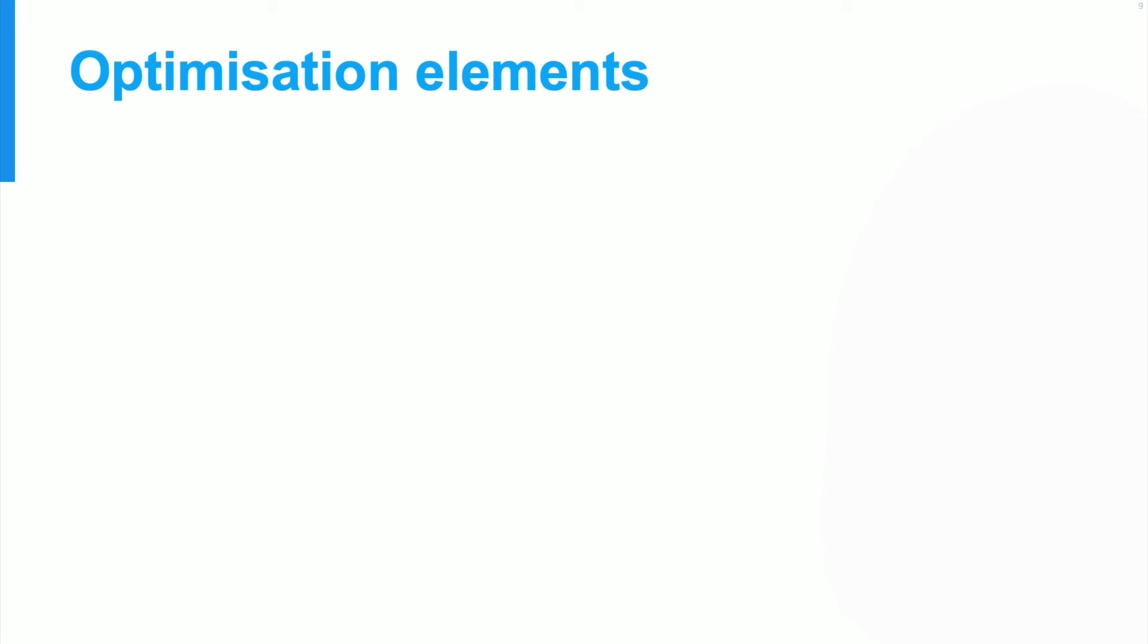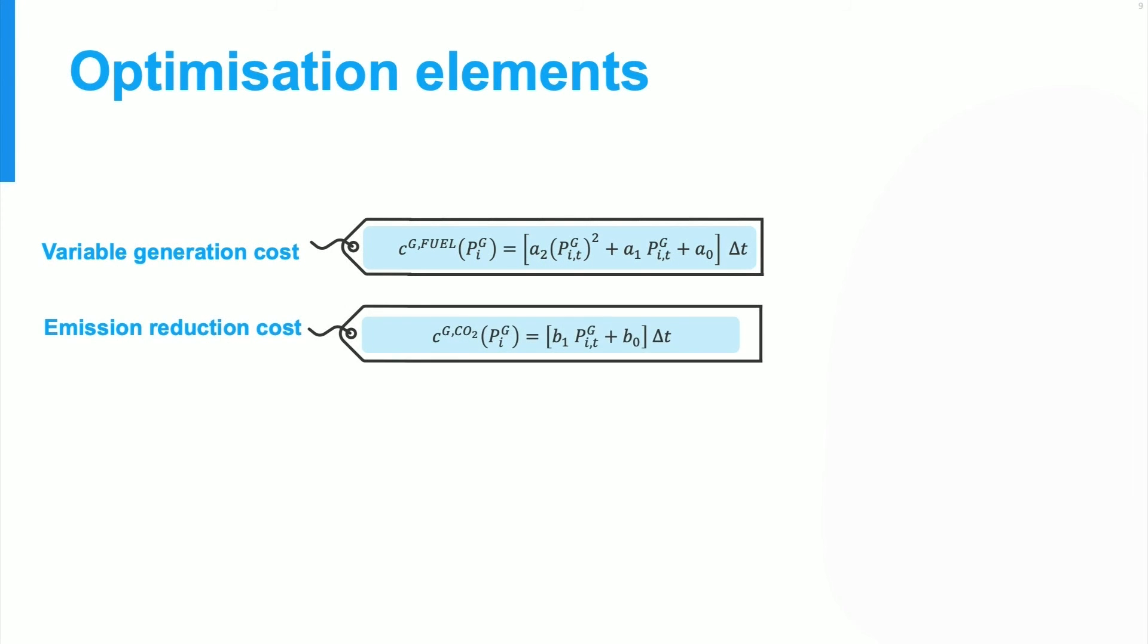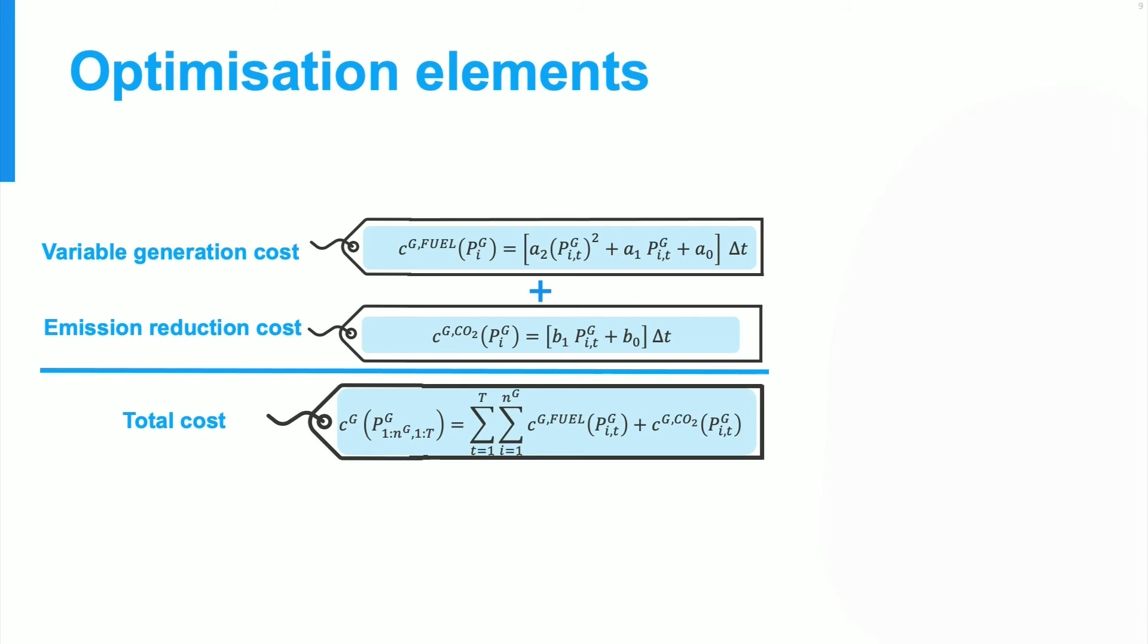And that brings us to the point where we can combine all elements we have introduced up until now. So I've defined a variable cost of generation for each generator, and an expression for its emission costs. And summing these over all generators, and all dispatch periods, gives us an expression for the total costs of running our system.